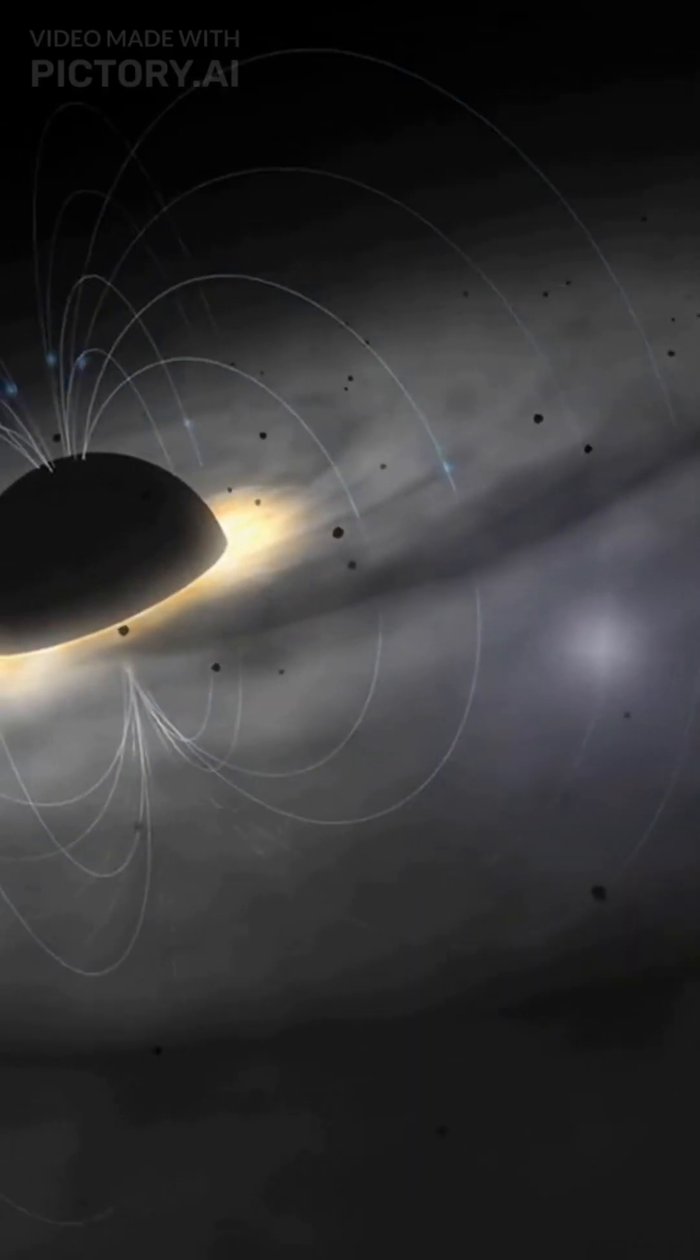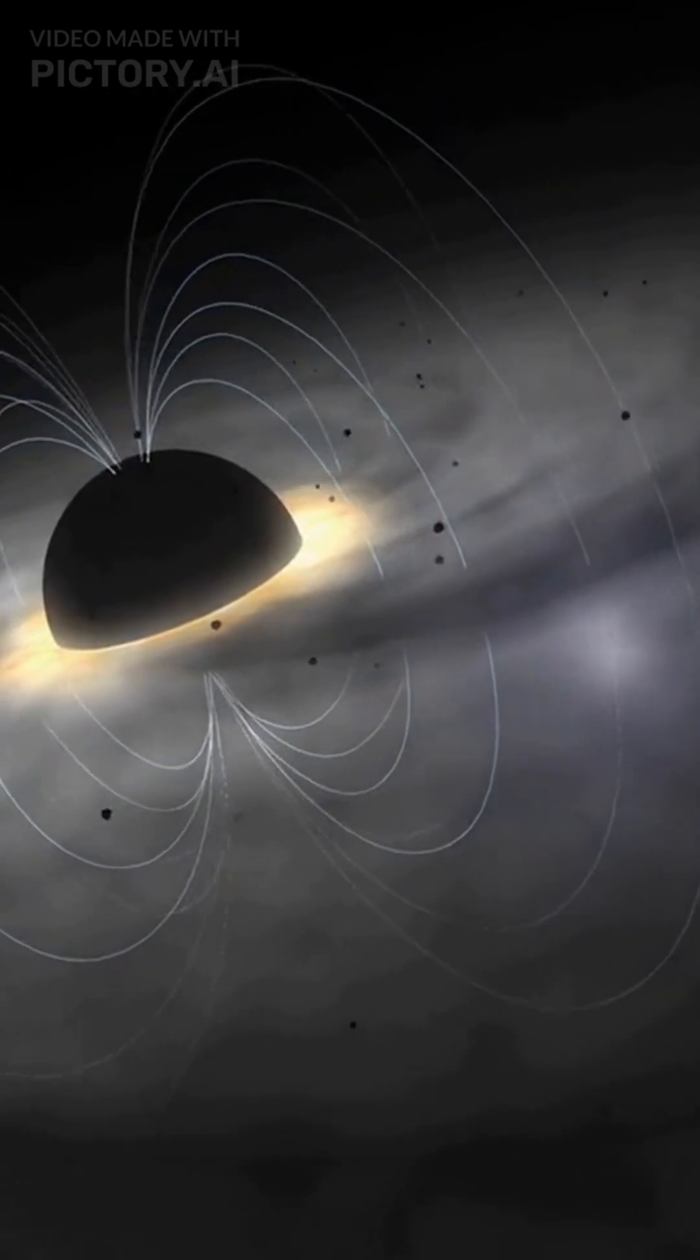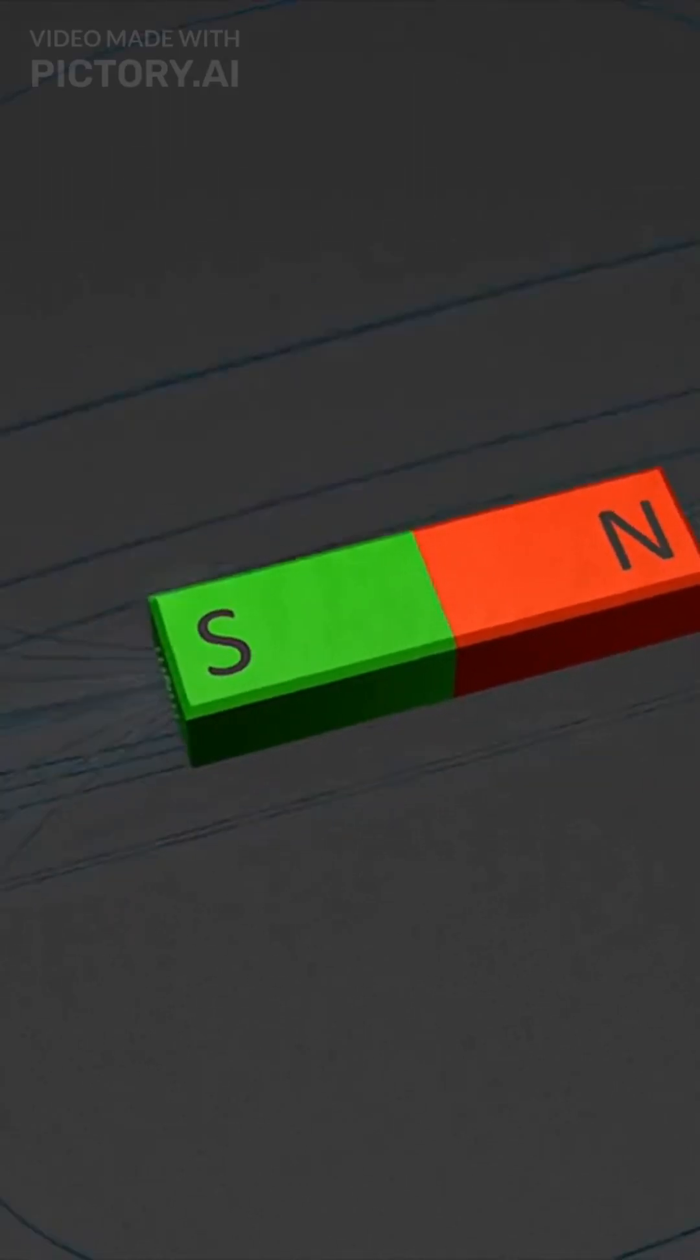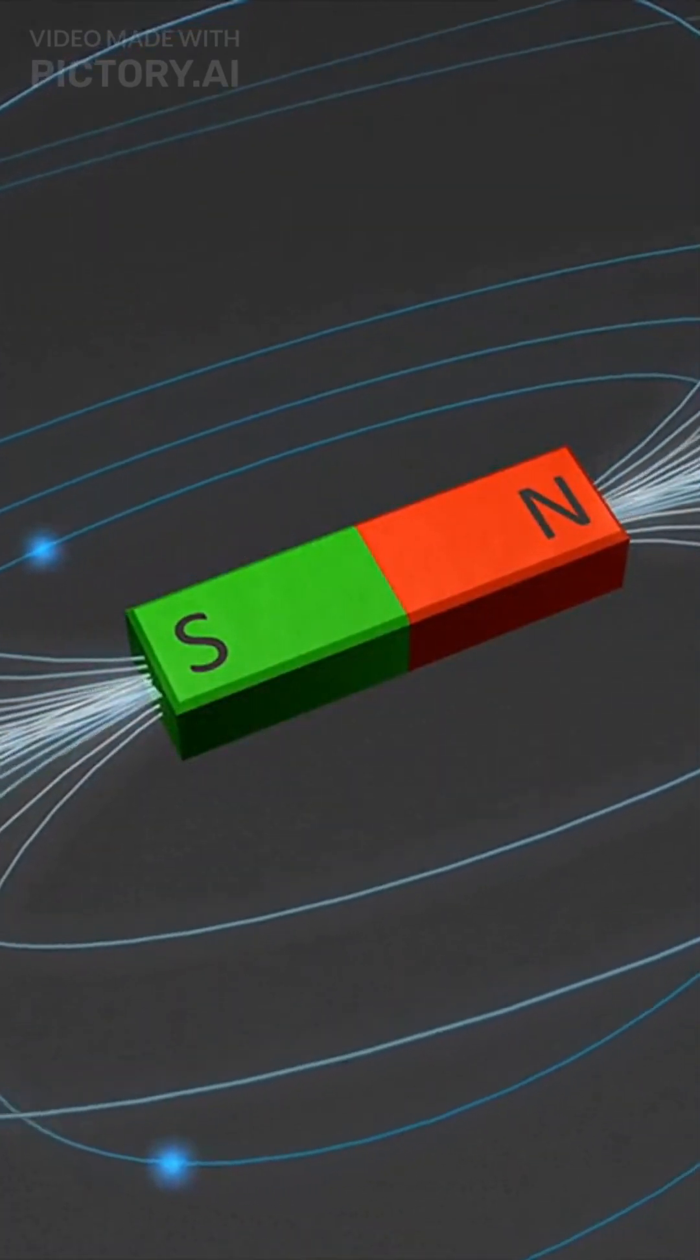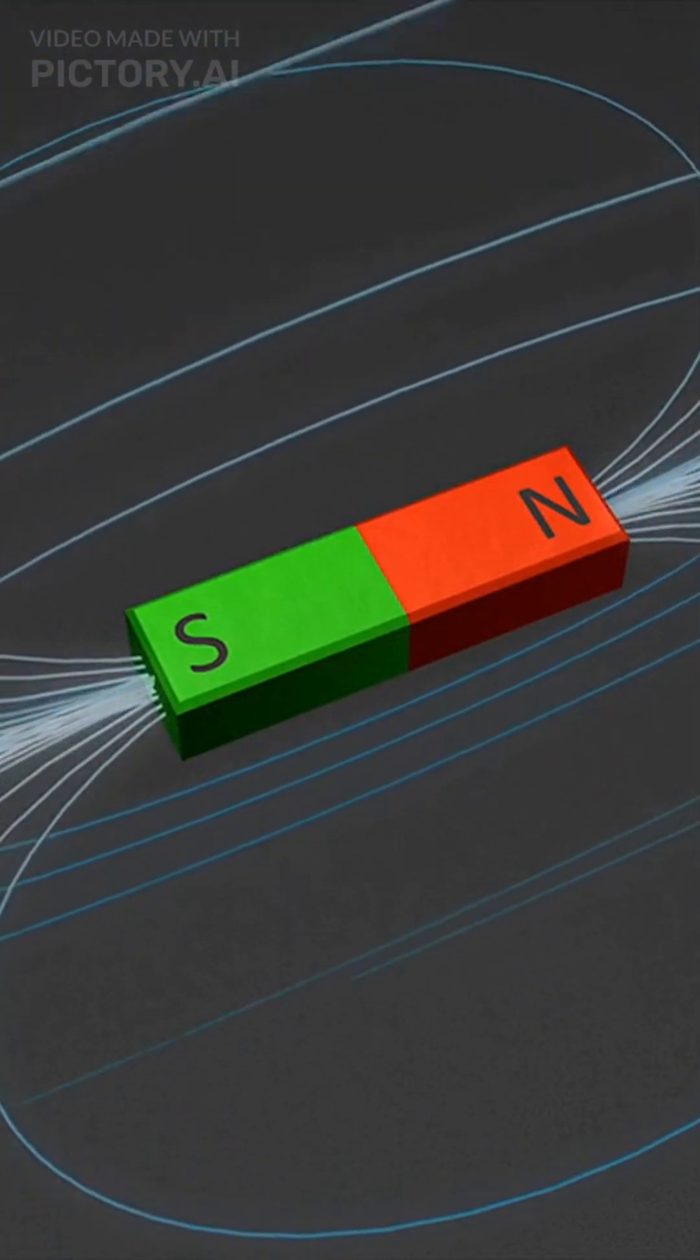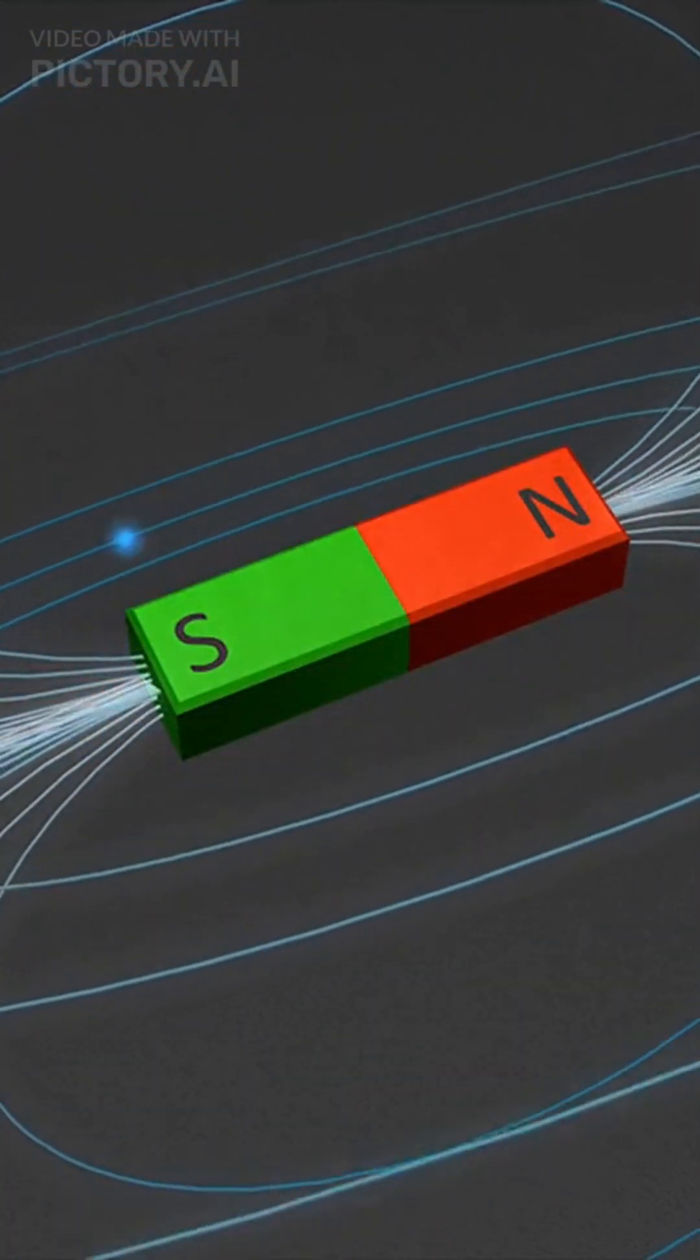The north and south poles of a magnet refer to the direction of the magnetic field lines that emanate from the magnet. The north pole of a magnet points in the direction of the magnetic field lines that flow out of the magnet, while the south pole points in the direction of the magnetic field lines that flow into the magnet.